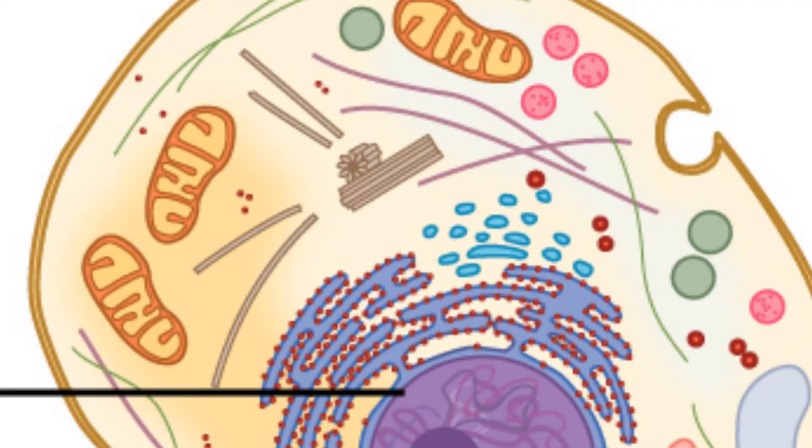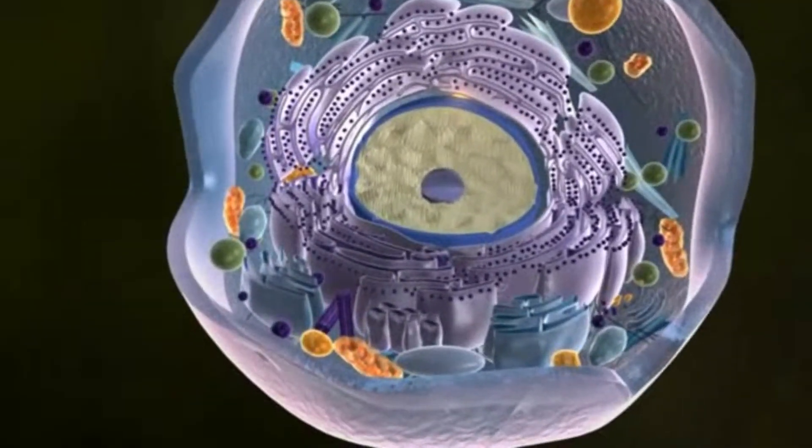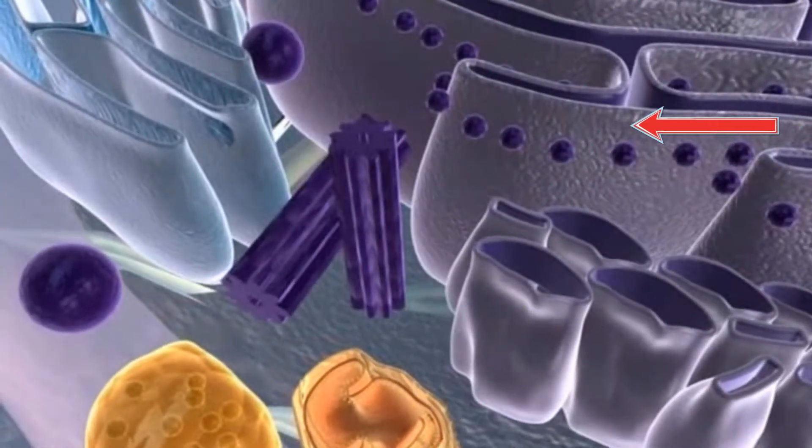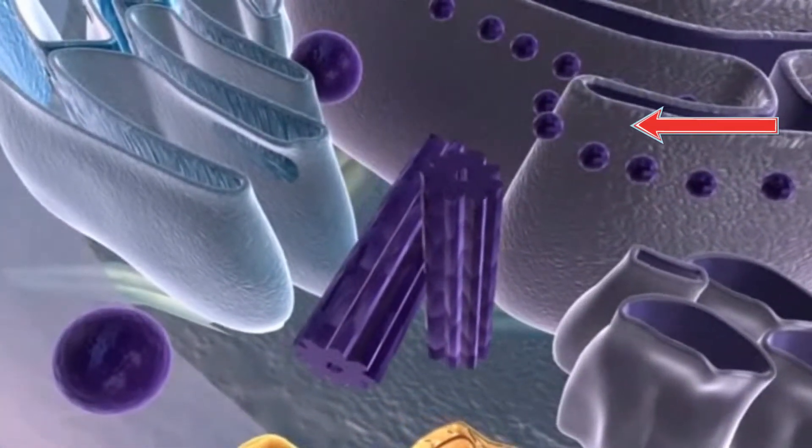First, there are two types of ER: rough ER and smooth ER. Rough ER, or RER, is located very close to the nucleus. Rough ER gets its look from tiny protein factories called ribosomes, which are embedded in its membranes.